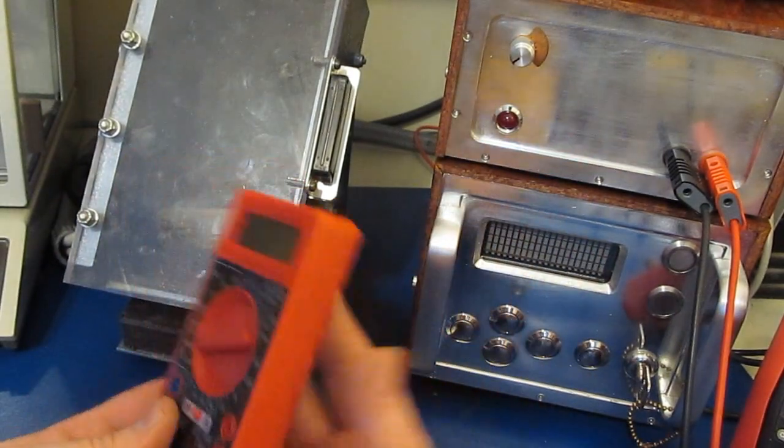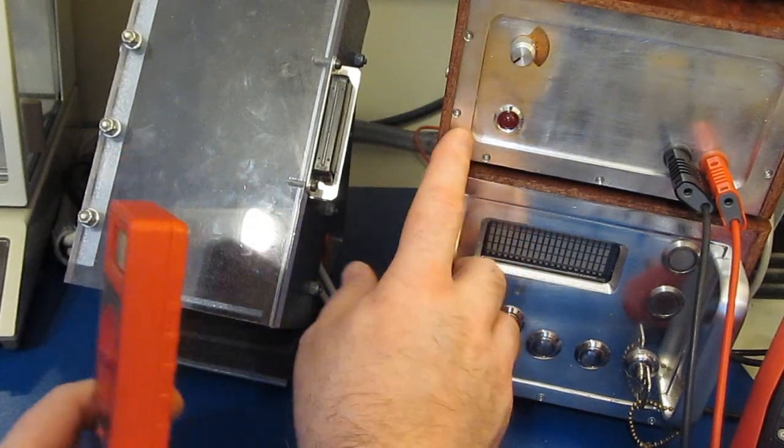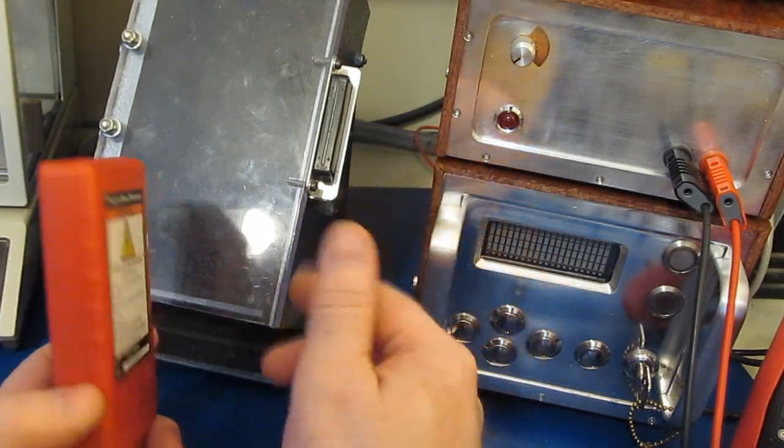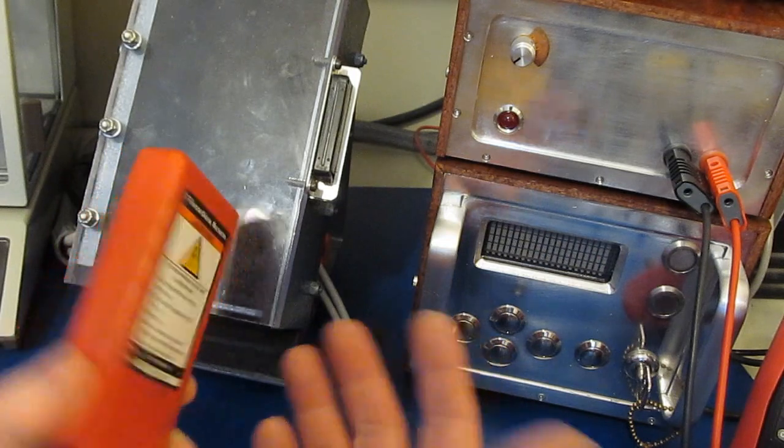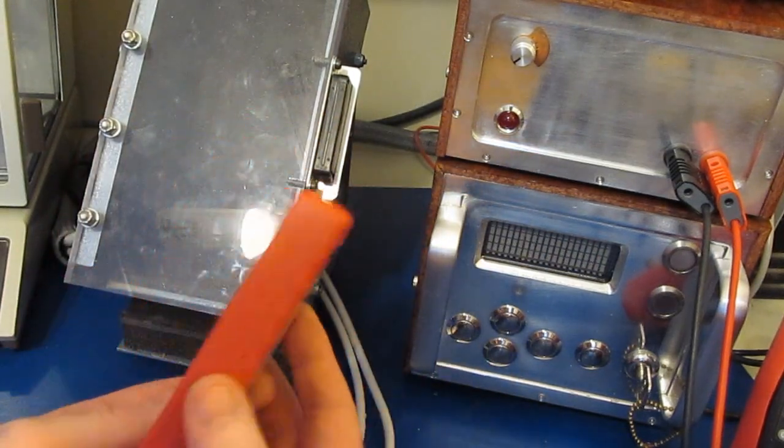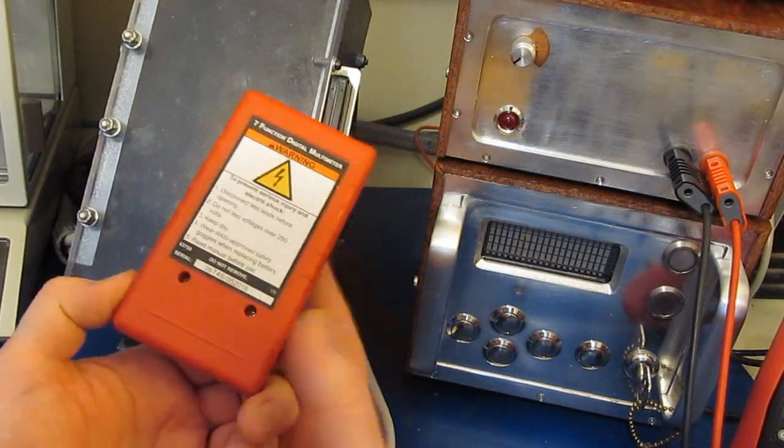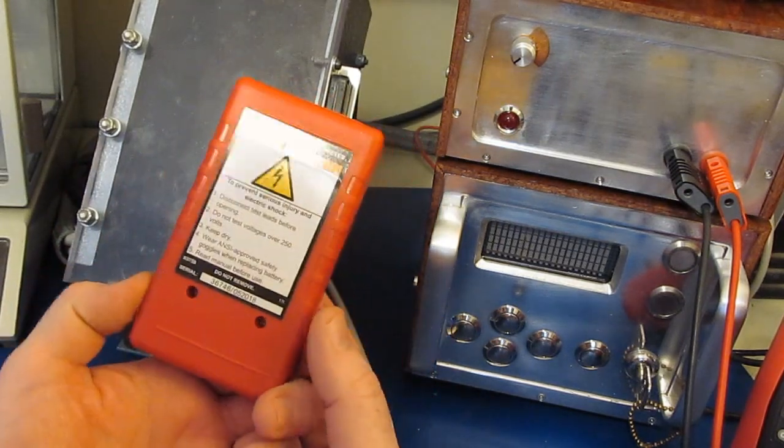Basically what I was trying to do with this generator is mimic the energy available in a half of a cycle on an AC main. It's not a lot of energy, but it will typically do enough damage to these meters where we can get an idea how they may behave with a higher energy transient, like the IEC surge test.